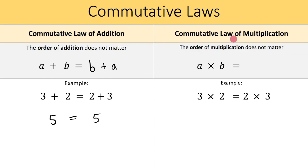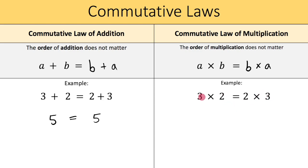Let's now talk about the commutative law of multiplication, which tells me the order of multiplication does not matter. So a times b equals b times a. Write down these notes so you can refer back to them later. Does 3 times 2 equal 2 times 3? Well, 3 times 2 is 6, and 2 times 3 is 6. And 6 equals 6, so the commutative law of multiplication works.